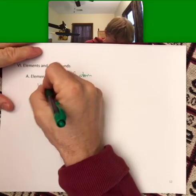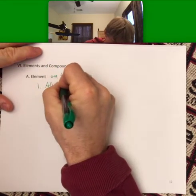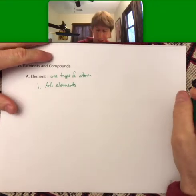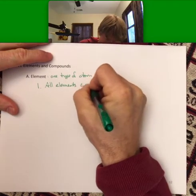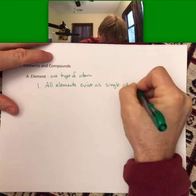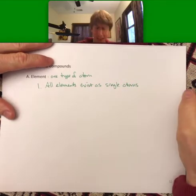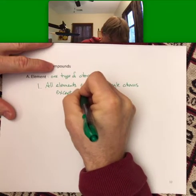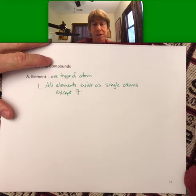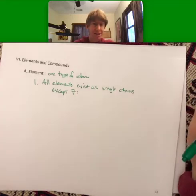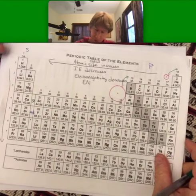All elements exist as single atoms except seven. Those are the diatomic elements, and they actually form the shape of a seven on the periodic table, sort of.